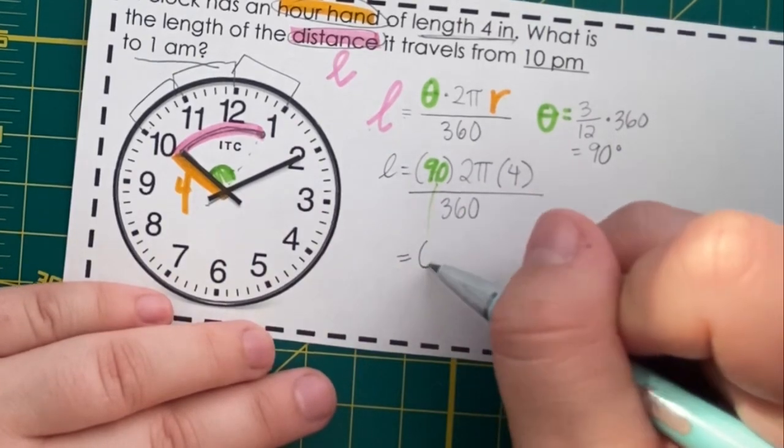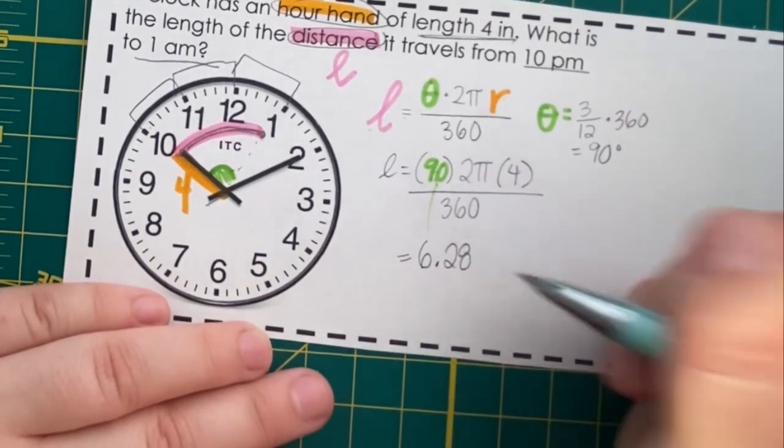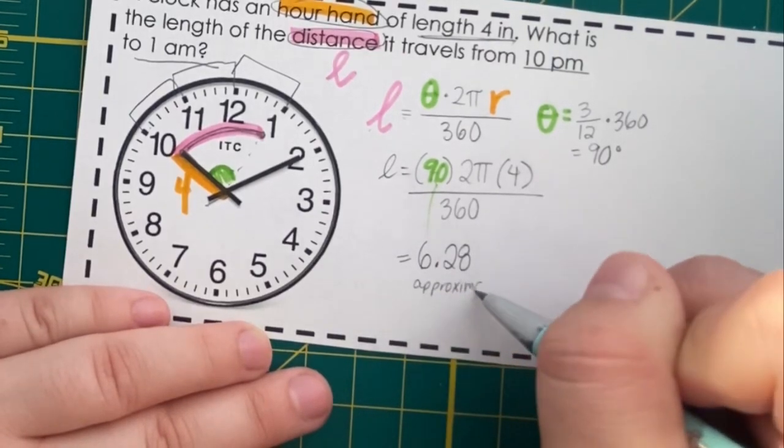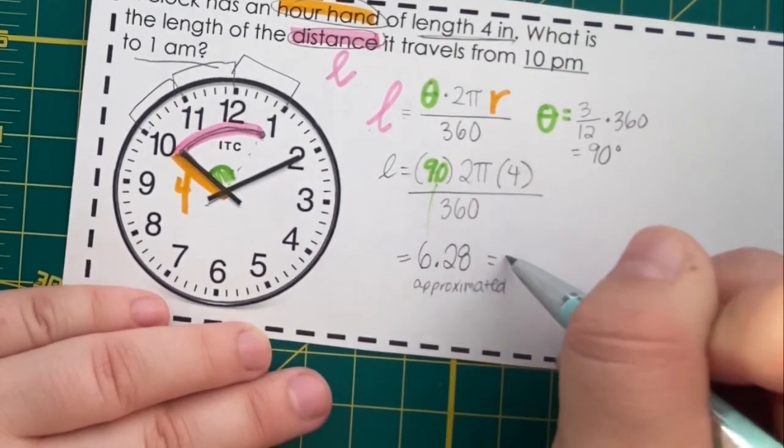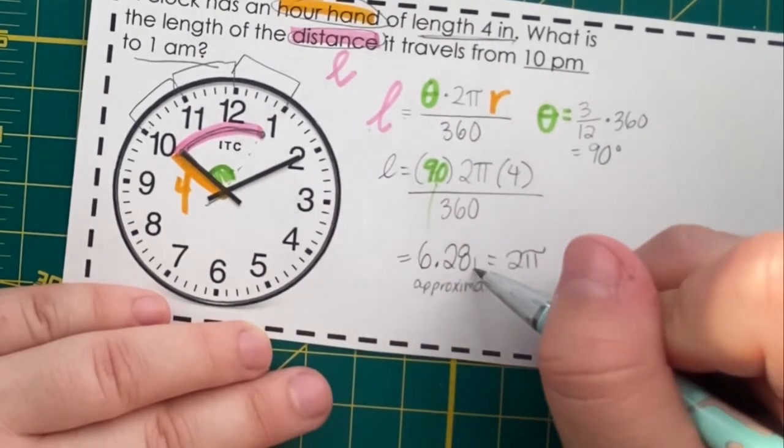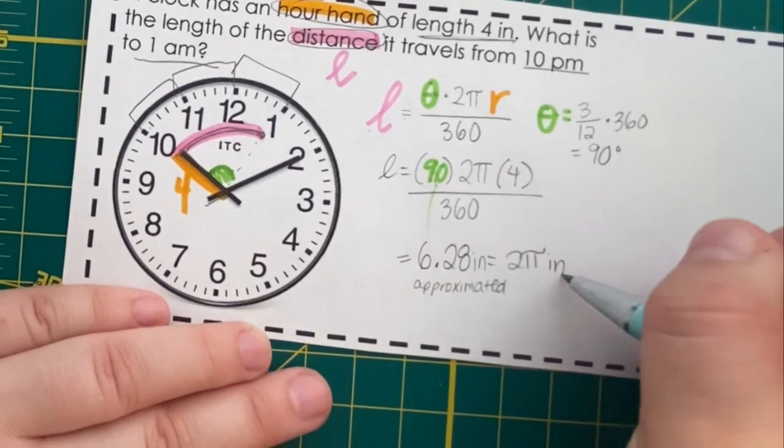And that's going to come out to 6.28 inches, approximated, or 2π. And this is arc length, so our unit is inches.